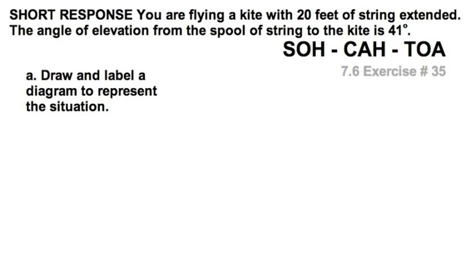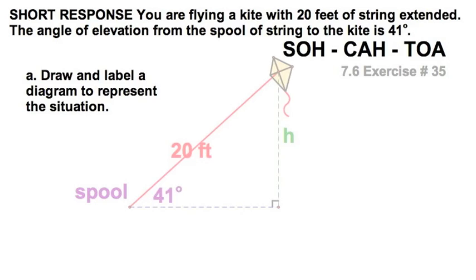Now, we'll finish this film with a word problem that has no picture. Because you are going to supply it. That's part A. Exercise 35. We are going to draw a diagram of this kite. There it goes.